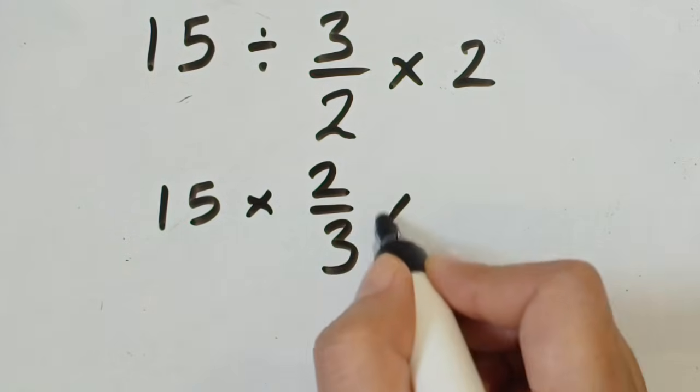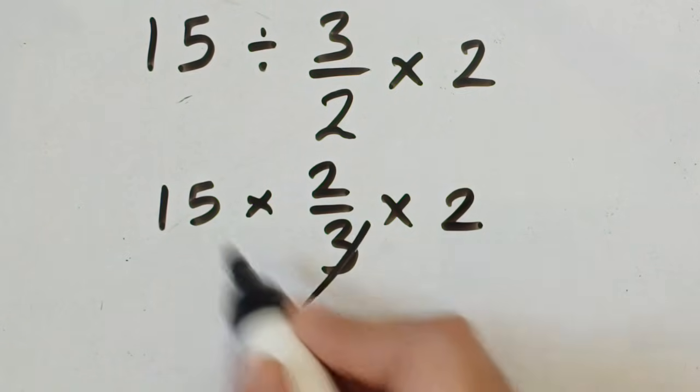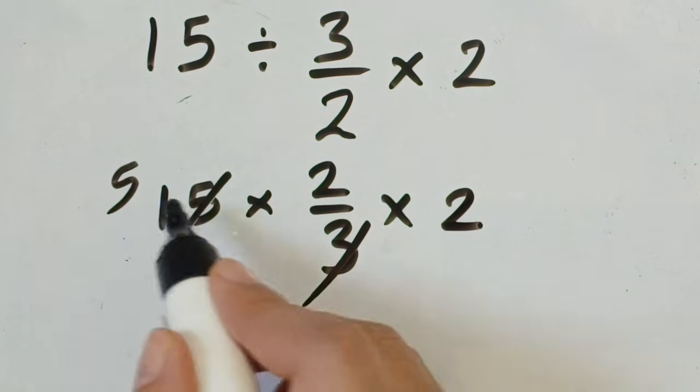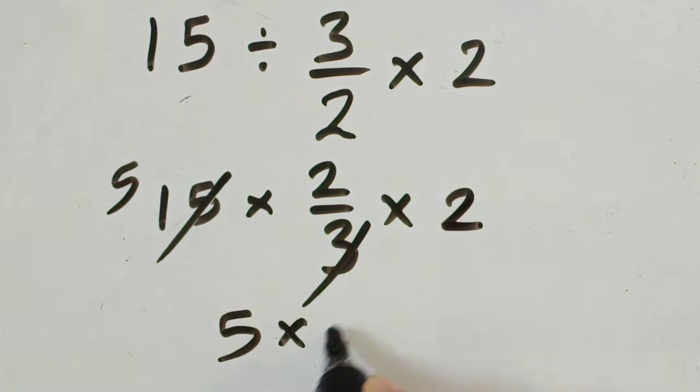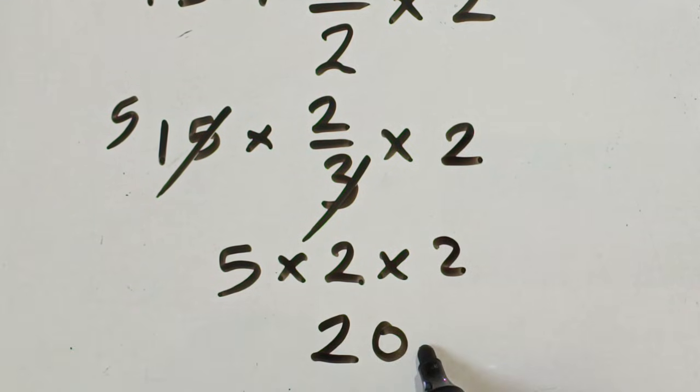So 2/3 times 2. Here we can cancel the 3—5 times 3 is 15. So 5 times 2 times 2, which is 5 times 2 equals 10, 10 times 2 equals 20. So 20 is the correct value for this expression.